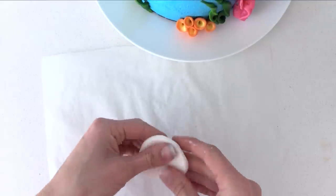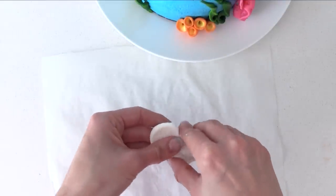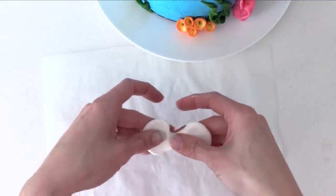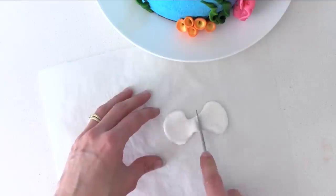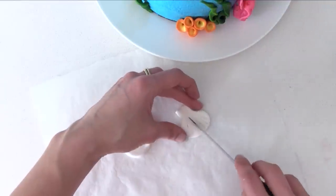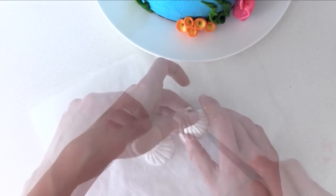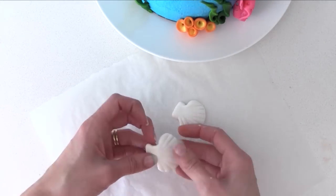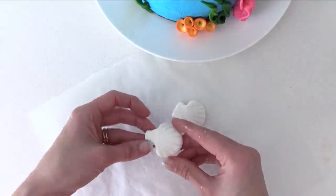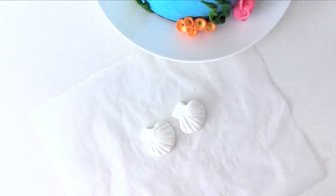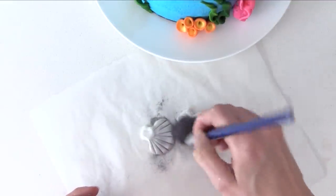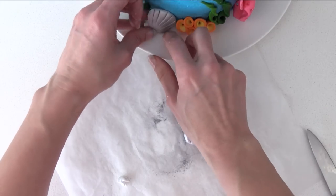To make some shells, get a ball of fondant and flatten it out. Squeeze it in the middle to make it scrunched in a bit, then cut that in half to give you two shell shapes. Use your knife to make indents from the center out to the outer edge. Shape it down and around your finger so it's rounded on the edges. Brush them with luster dust, I'm using silver, and add them to the side of the cake.